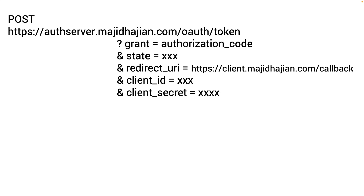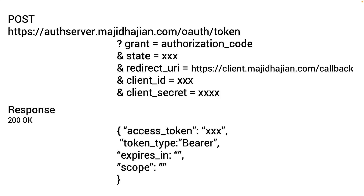Make sure this happens on your backend — you should never reveal the client secret publicly. Once you do that on your backend, you will receive a response which gives you an access token and token type. From this point on, you can make requests to any APIs and validate your users.